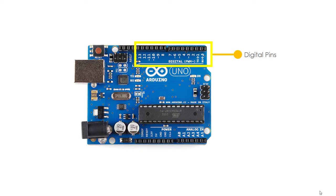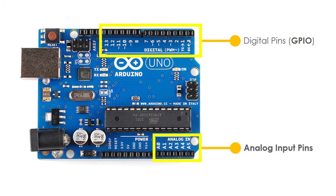Aside from the 14 general-purpose Digital Input and Output Pins or GPIO, Arduino Uno is also capable of reading up to 6 different analog signals. It is through these analog pins A0 to A5, but what's the difference? Why do you have to use analog pins in the first place?